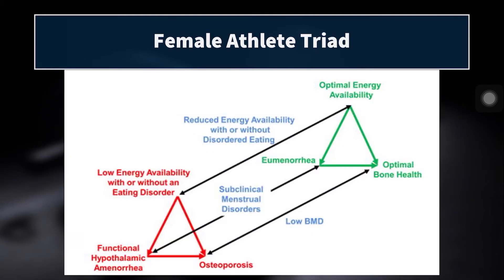In the green we have what is optimal: optimal energy availability, eumenorrhea — a normal menstrual cycle — and optimal bone health. In the presence of an inadequate diet, overtraining, or increased stress, athletes can slide down to the red triangle, which includes osteoporosis, functional hypothalamic amenorrhea — an irregular menstrual cycle — and low energy availability. This can occur with or without an eating disorder. We have to be careful not to jump to conclusions and instead refer to specialists and bring in a team to support our female athletes.